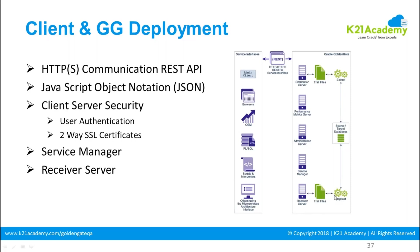The receiver server writes data to the remote trail, and then the replicate process applies it to the target database. Communication happens using REST API with JSON (JavaScript Object Notation) — this is all internal. Security has also been made more robust.